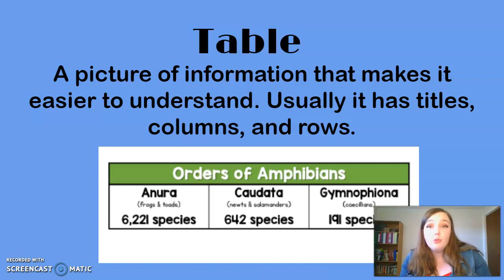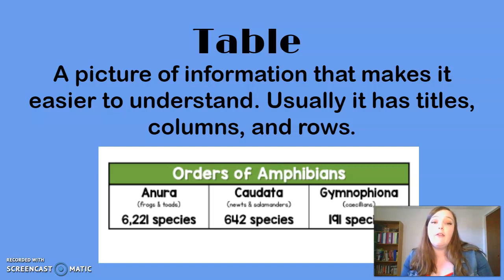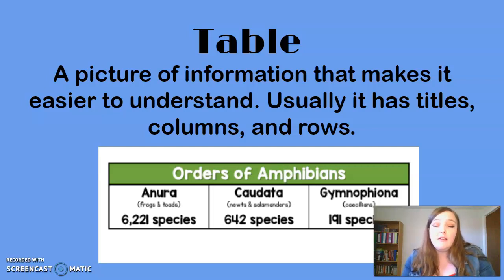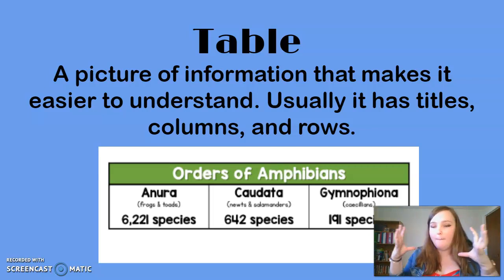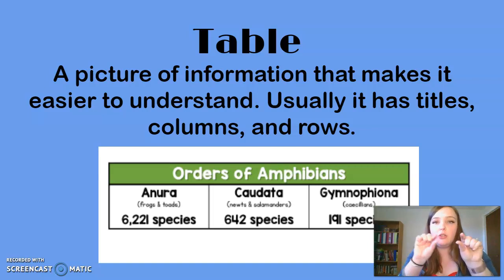Another type of visual you might see in a nonfiction text is a table. A table is another picture of information that makes it easier to understand — it usually has titles, columns, and rows. This example is telling us about the different types of frogs we can see in our world. I really love seeing tables in stories because they take all that long, detailed information and make it a little bit easier to pick out the important parts.